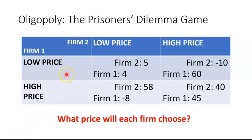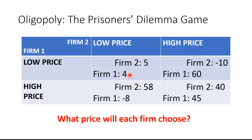Let's look at it from the point of view of firm one. Firm one wants to think: what do I do if, for example, firm two chooses the low price? If I choose the low price, I get a payoff of four. If I choose the high price, I'm going to face losses. So it's clear that if firm two chooses the low price, firm one would be best off choosing the low price.